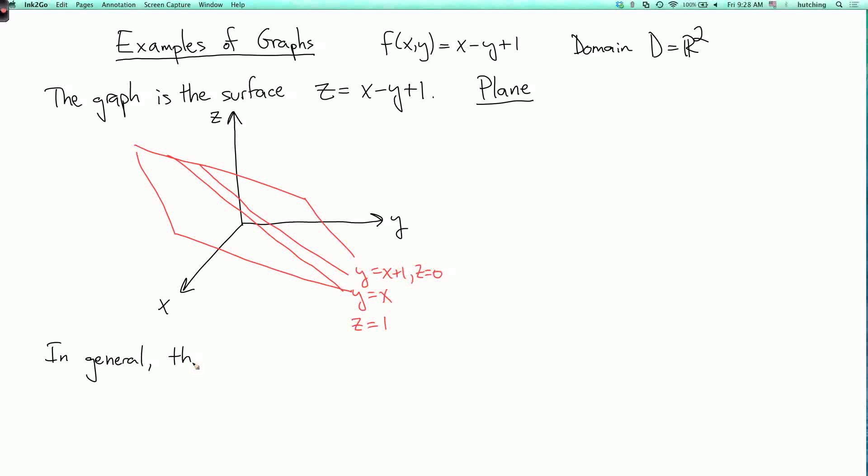Anyhow, in general, the graph of a linear function... So a linear function is a function of the form f of xy equals ax plus by plus c, where a, b, and c are constants. So the graph of a linear function is a plane.